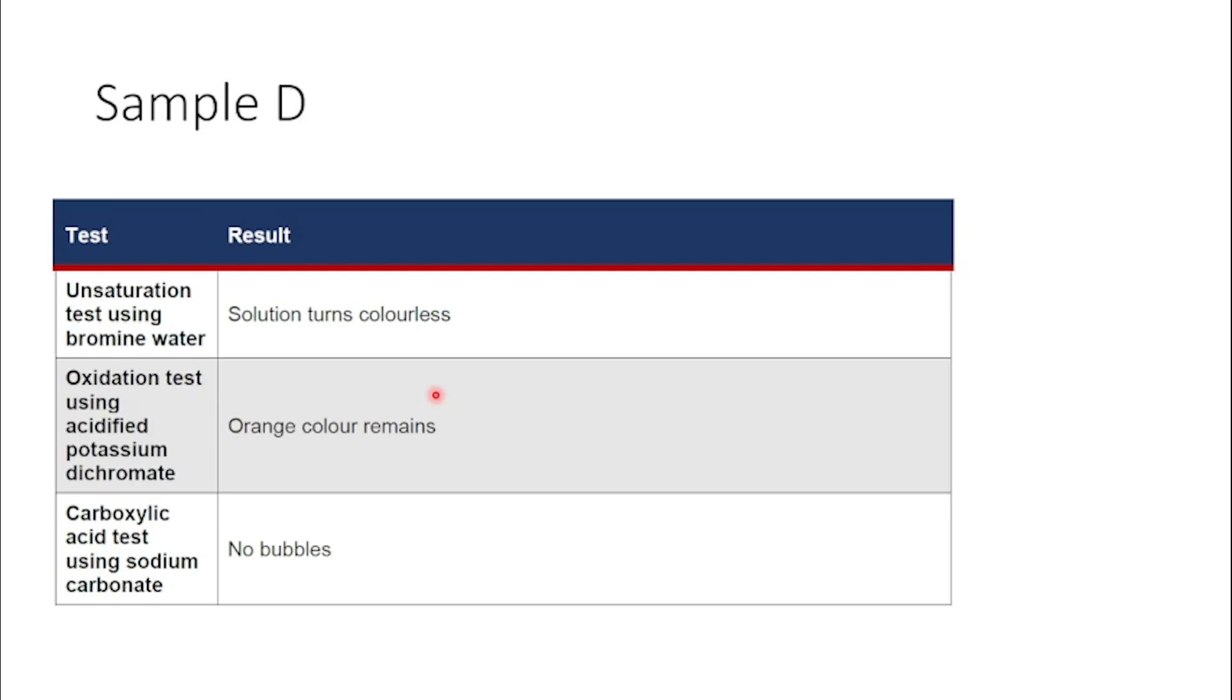So looking at sample D, the first thing we want to look at are those tests where we submit our molecule or a sample of our molecule to different tests which can give us an idea about the functional groups in them.